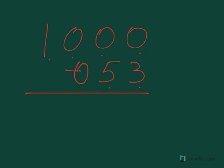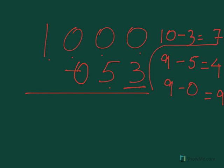Now the same process: the number at one's place will get subtracted from 10, and all the other numbers will get subtracted from 9. So here: 10 minus 3 is 7, 9 minus 5 is 4, and 9 minus 0 is 9. So 7 will come here, 4 will come here, and 9 will come here.